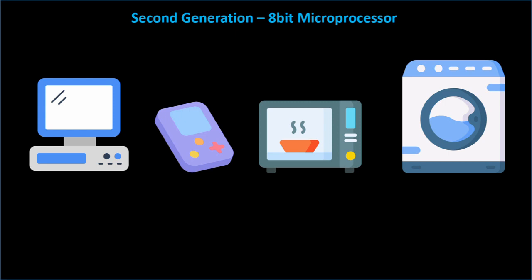Compared to the first generation of microprocessors, the second generation was much more powerful and capable of handling more complex tasks. With their larger address spaces, cache memory, and improved performance, they paved the way for the development of more advanced and capable computers.